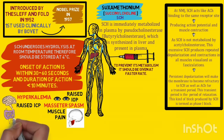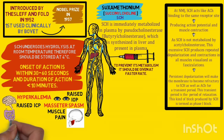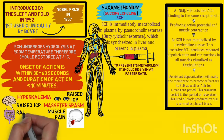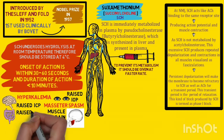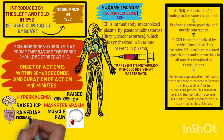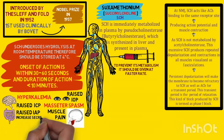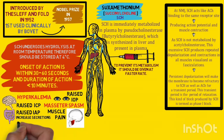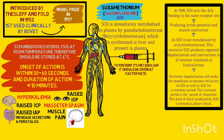In the gastrointestinal tract, intragastric pressure is increased due to contraction of abdominal muscles. By activating GI muscarinic receptors, succinylcholine can also increase GI secretions and peristalsis.